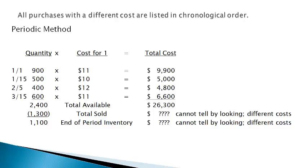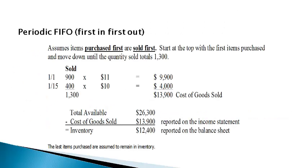Under the periodic method, the cost of sales is computed only at the end of the period and cost of sales is not recorded at the time of the sale. The cost of each item sold or remaining is not known and must be estimated. The FIFO method assumes that items purchased first are sold first. Start at the top of the list with the first items purchased and list the quantity purchased until you get to the total sold of 1,300. The beginning inventory was there first and is sold first; the first purchase is sold next. The cost of items sold is subtracted from the total available to get the value of inventory remaining in the warehouse. Items purchased later are assumed to remain in the warehouse.